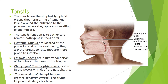The tonsils are the simplest lymphoid organ. They form a ring of lymphoid tissue around the entrance to the pharynx, where they appear as swellings of the mucosa. Their function is to gather and remove pathogens from food or air. The palatine tonsils are located at the posterior end of the oral cavity; they are the largest tonsils and more prone to infection. Lingual tonsils are a lumpy collection of follicles at the base of the tongue. Pharyngeal tonsils, also known as the adenoids, are located in the posterior wall of the nasopharynx. The overlying epithelium creates tonsillar crypts, which trap and destroy bacteria.